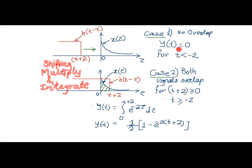In the next case, when h of t minus tau has crossed tau as 0, now both signals overlap and they overlap in the region from 0 to t plus 2, which decides the limits for integration while calculating the output y of t.